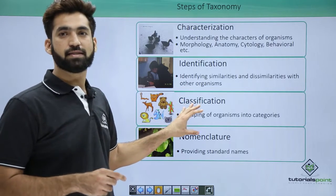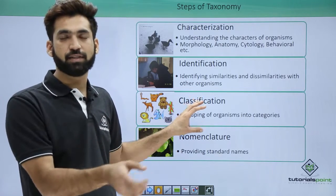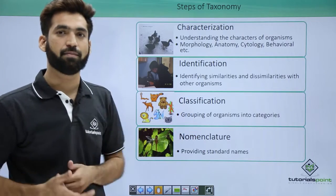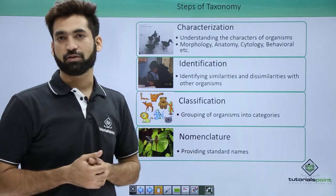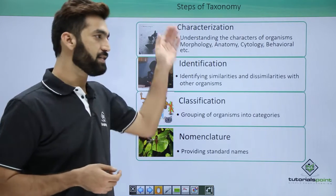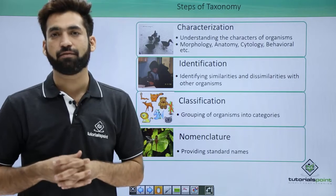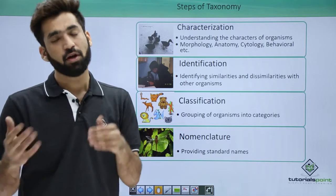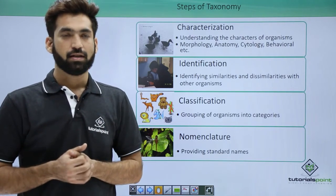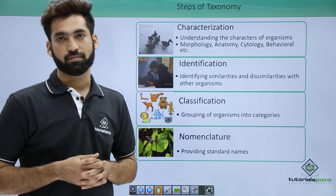Once I figure out that this particular bacteria matches the characters of a known bacteria, I classify it and assign it the scientific name. This is how taxonomy is done for any newly found organism or one that has not been classified yet. In the next class, we'll be discussing systematics.